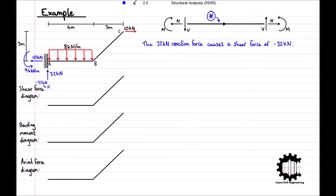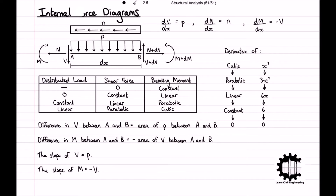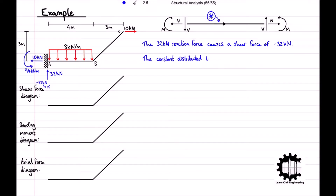Moving along the bar from left to right we only have a uniformly distributed load, in other words a constant distributed load. From our table previously we know that if the distributed load is constant the shear force will be linear, and the change in shear force is equal to the area of the distributed load. Additionally, as the distributed load is being applied in the downwards direction, which is positive for the left hand side, the shear force increases.